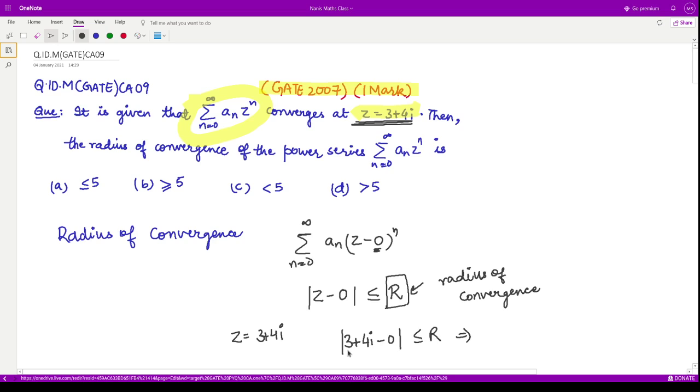To take the modulus of a complex number, you square the real part, square the imaginary part, and then take the square root of this term. So this comes out to be 9 plus 16 square root, which is 25 square root, which is 5. So here we have r is greater than equal to 5. The radius of convergence is greater than equal to 5.